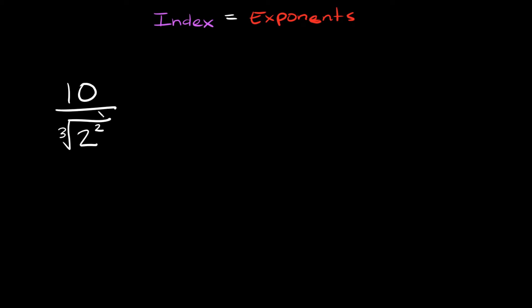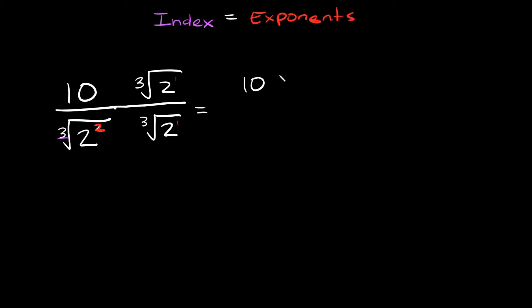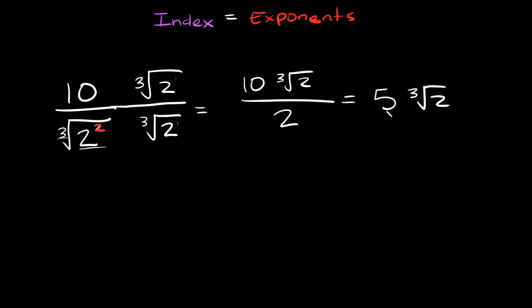So here I've switched it up a little bit — we have 10 over the cube root of 2 squared. In this case, we already have an exponent of 2, so I just have to multiply the top and the bottom by the cube root of 2 to the first power. Now our index 3 matches our exponents — we had a 2 and we're multiplying by 1, so 2 plus 1 equals 3. On top we have 10 times the cube root of 2, over the cube root of 2 squared times the cube root of 2. Everything cancels, leaving 2 in the denominator. Then 10 over 2 reduces to 5, so the final answer is 5 times the cube root of 2.